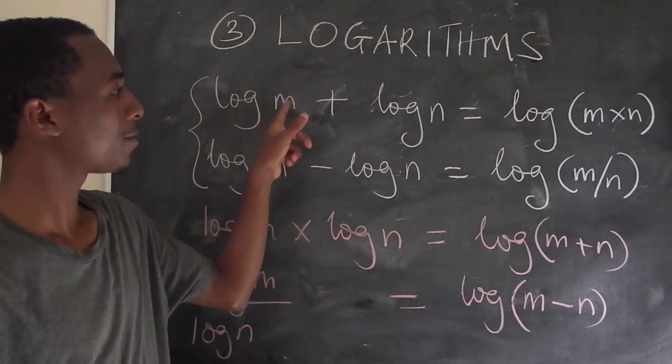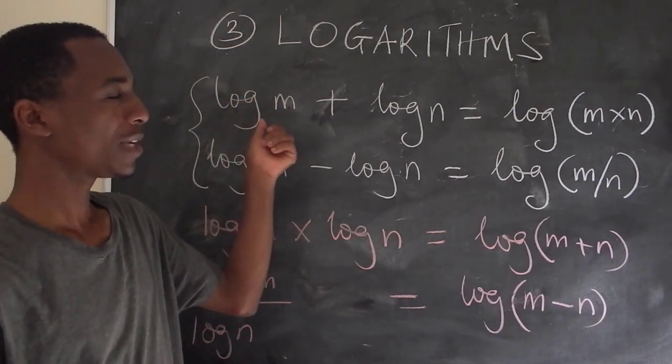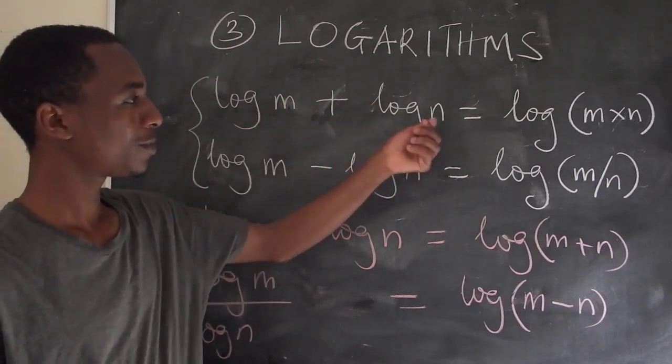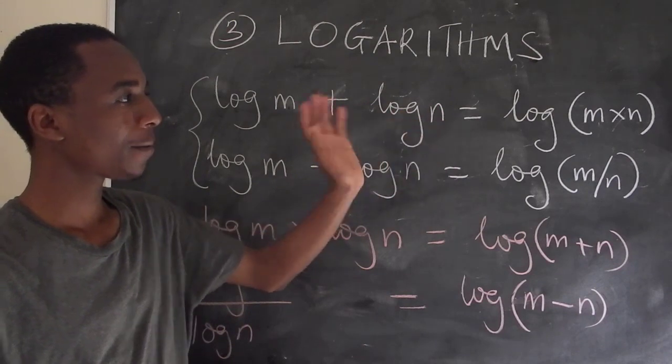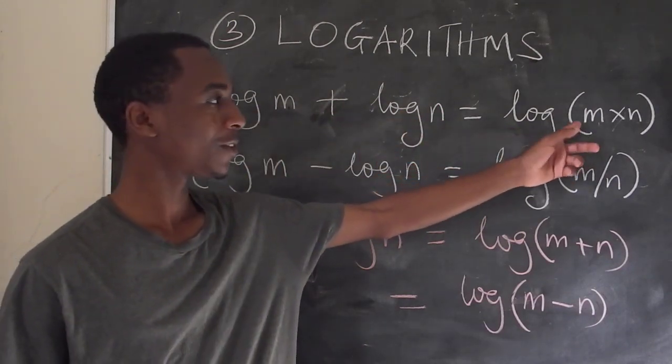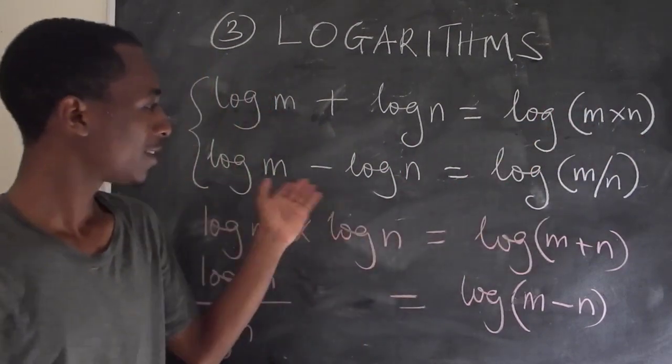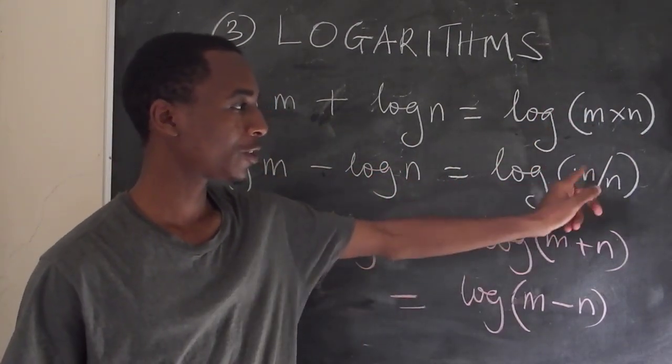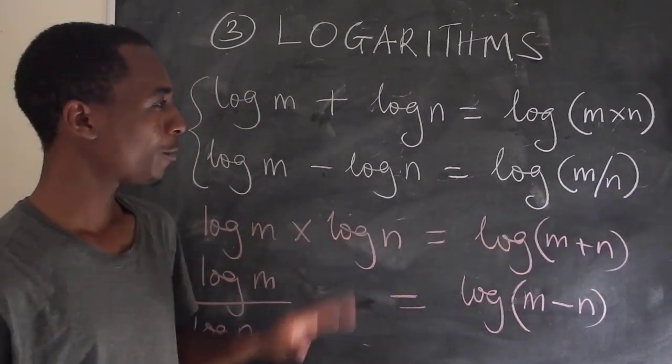If I have a logarithm of a number m to some base, I'm going to assume these logarithms are to the same base, plus another logarithm of a number n to some base, yes the bases should be the same, then this is equivalent to the log of m times n. The same works for subtraction. Only that now we have division of the two numbers. Now because of this,